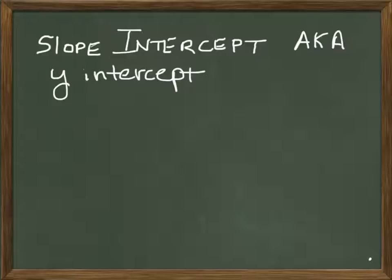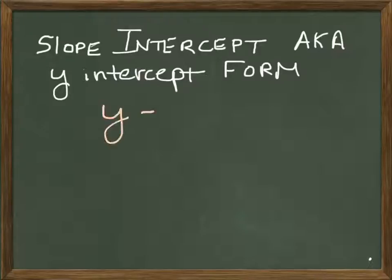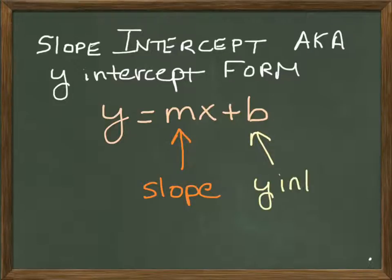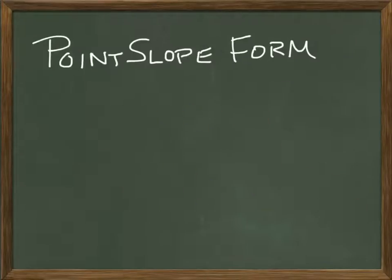Slope-intercept form is the technical name — it doesn't really matter which name you use, so long as you know y equals mx plus b. The components are M, which is the slope, and B, which is the y-intercept, hence the name slope-intercept form.